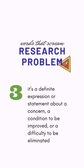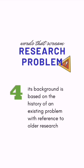The third indicator is that it is a definite expression or statement about a concern, a condition to be improved, or a difficulty to be eliminated. The general and specific research problems of a research manuscript give us the idea of what is the broad description of the problem and its specific contributing factors.